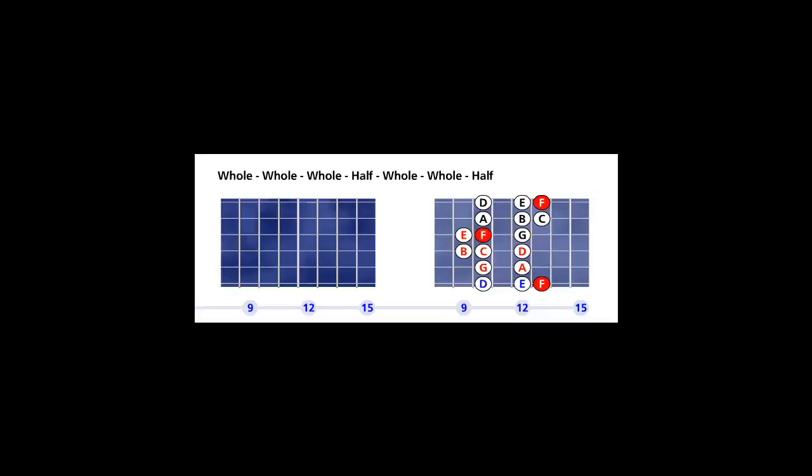The Lydian mode 4 formula is a whole, a whole, a whole, a half, a whole, a whole, and a half. Half step is between step 4 and 5. Also half step between step 7 and 8.